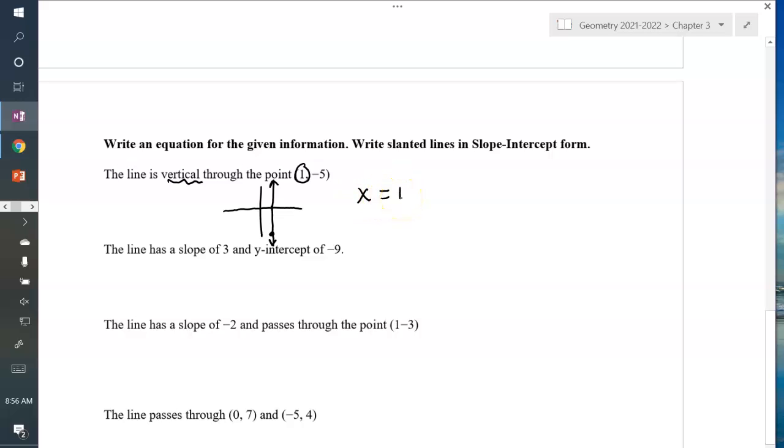Line has a slope of 3 and a y-intercept of negative 9. That means that m equals 3, b equals negative 9. So y equals 3x minus 9. Let's plug into slope-intercept form.